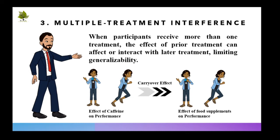For example, a researcher wants to compare the effect of caffeine and food supplements on performance. In experiment 1, the researcher gave caffeine to the participant and recorded the performance. The researcher then started the second experiment with a food supplement to measure performance, without eliminating the effects of caffeine from the previous experiment. In this way, the cause-effect result cannot be established with a specific product.